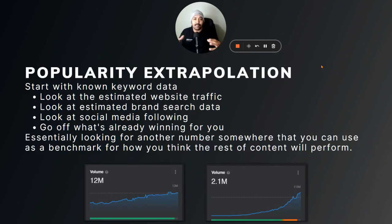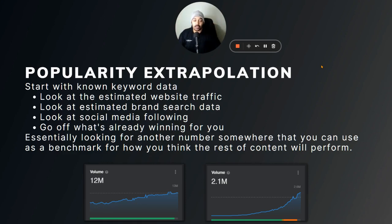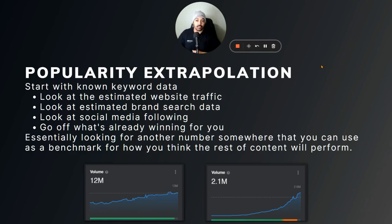Popularity extrapolation is more or less the same thing, but instead of hard data like population, you're looking at soft data. You start with a known keyword, then look at estimated website traffic — either through search tools or estimated web traffic tools. As long as you use the same tool for everything you're comparing, the data is at least consistent even if not perfectly accurate. You can look at brand search specifically for that brand name and see what the estimated search data is. For newer platforms, services, or products, you can look at social media following and check if there's actual engagement.